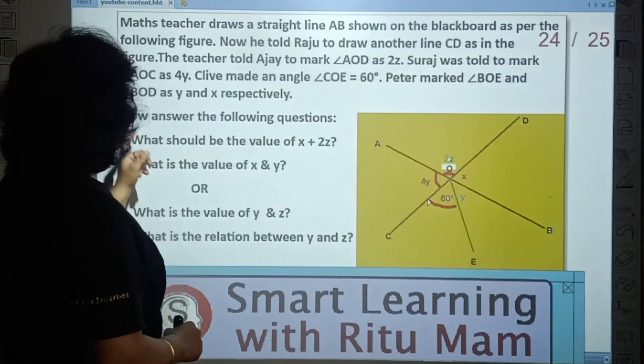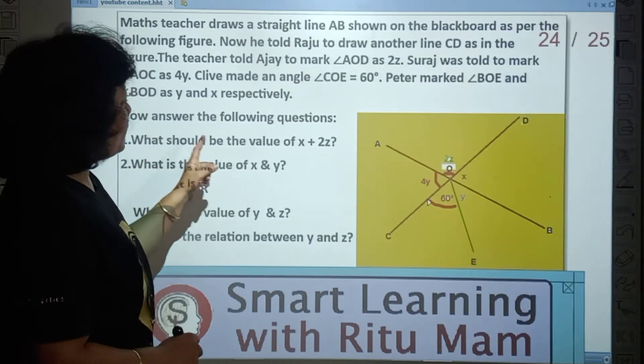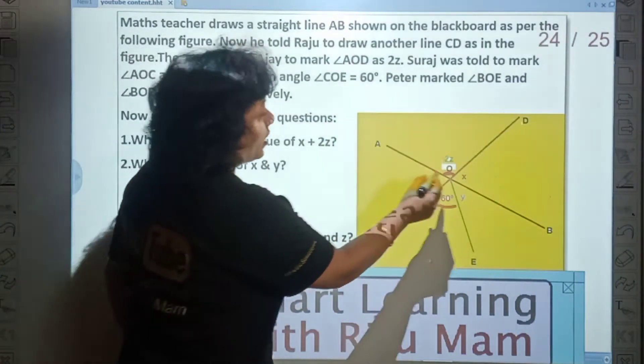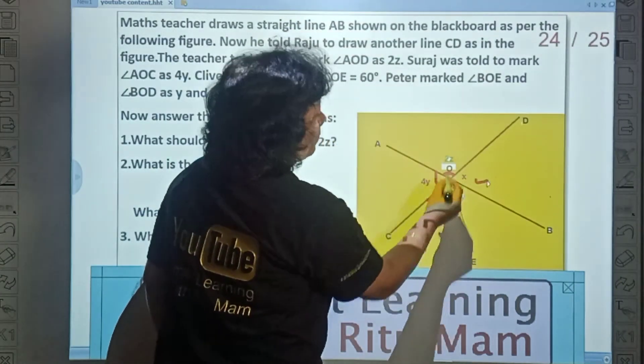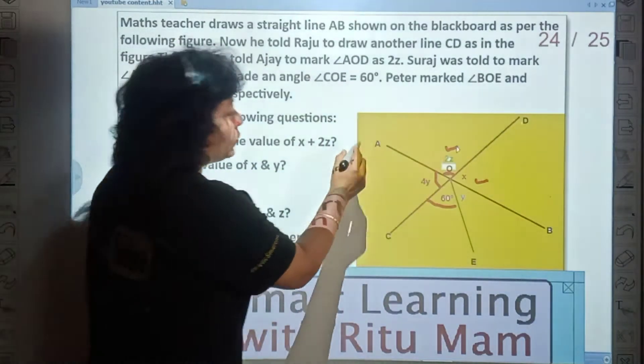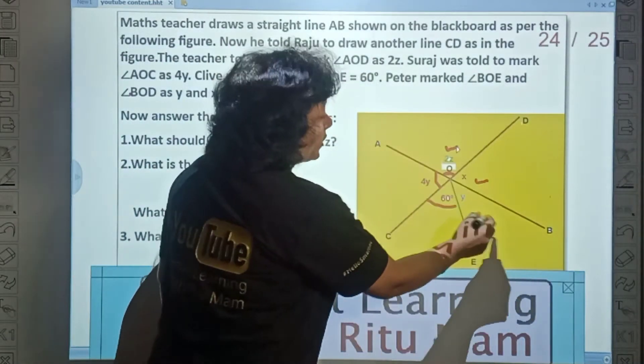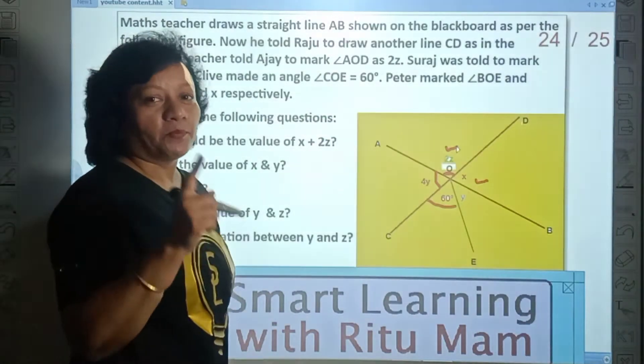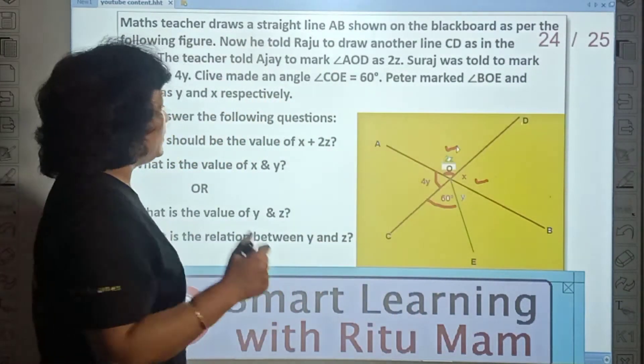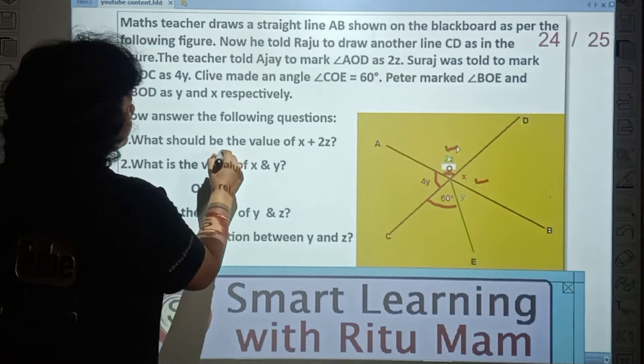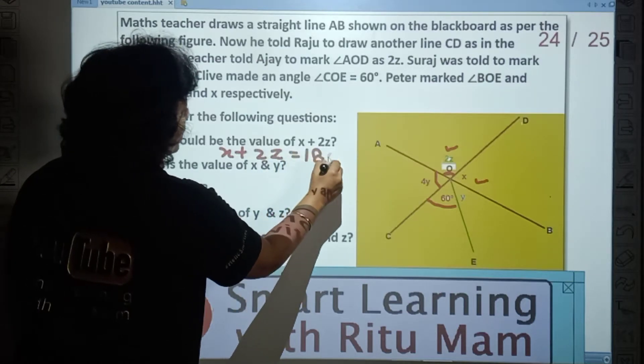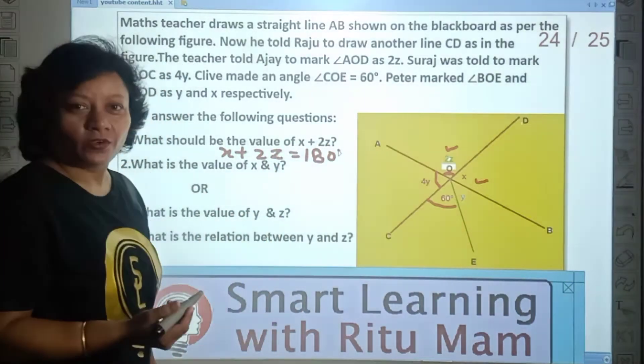Now answer the following questions. What should be the value of X plus 2Z? Look carefully. X is here, 2Z is here. What is the relation between these two angles? You know that AB is a straight line and by linear pair, X plus 2Z equal to 180. So what is the relation? X plus 2Z equal to 180.